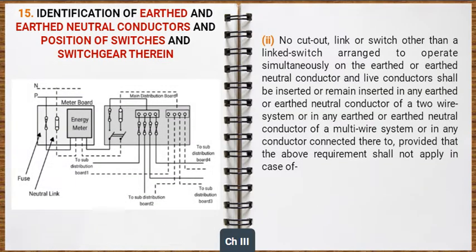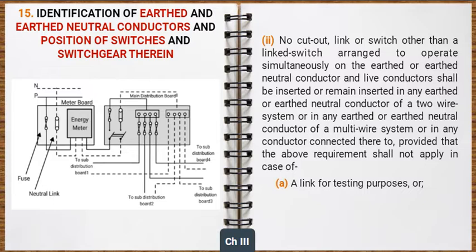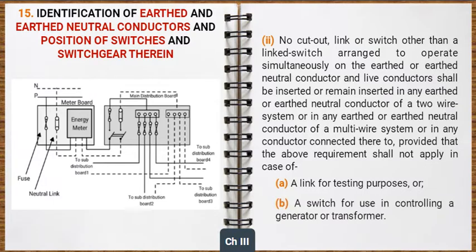No cut-out, link or switch other than a linked switch arranged to operate simultaneously on the earthed or earthed neutral conductor and live conductors shall be inserted or remain inserted in any earthed or earthed neutral conductor of a two-wire or multi-wire system, or in any conductor connected thereto. This requirement shall not apply in the case of a link for testing purposes or a switch for use in controlling a generator or transformer.